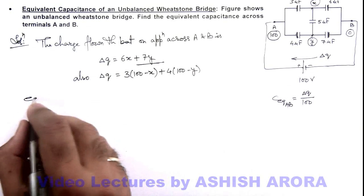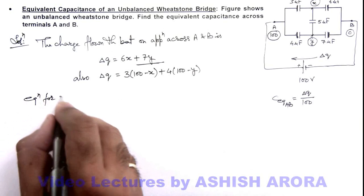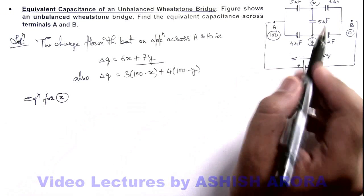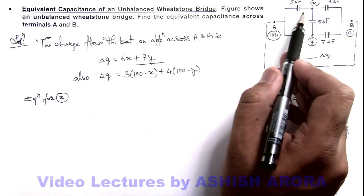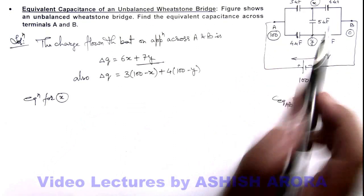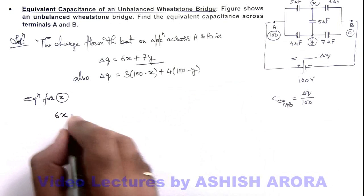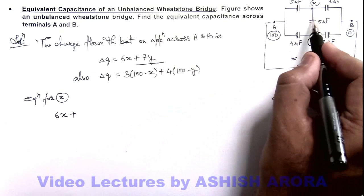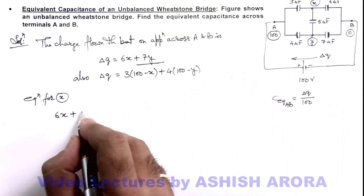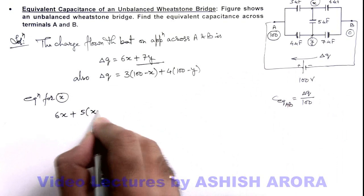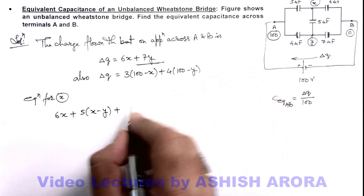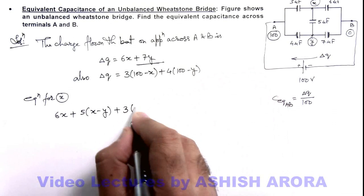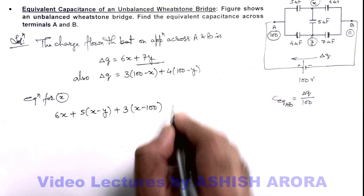So if I write equation for the potential x, that is the sum of charges on the three plates connected to x should be zero. If I write it, on this plate charge will be 6x, plus on this plate of 5 microfarad capacitor charge will be 5 multiplied by x minus y, plus on this plate of 3 microfarad capacitor it is 3 multiplied by x minus hundred, and this should be zero.